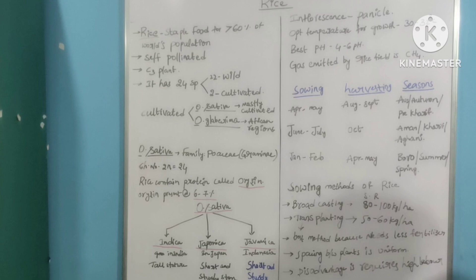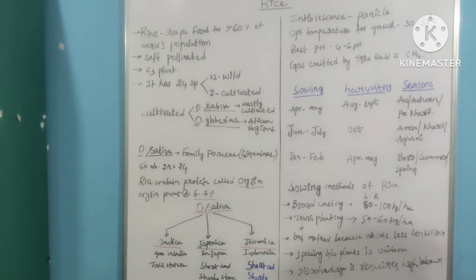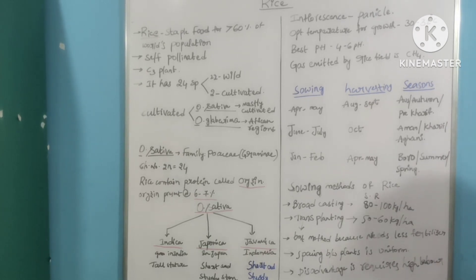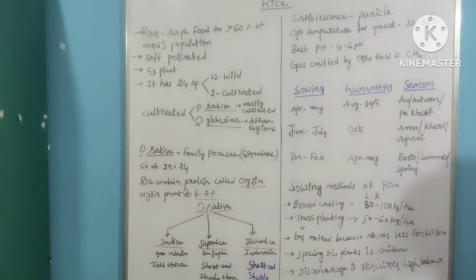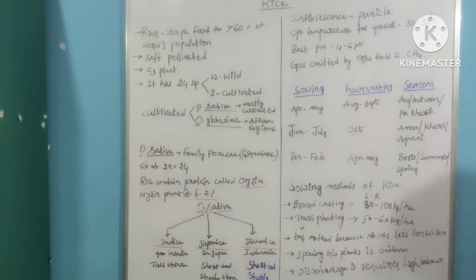Optimum temperature for growing of rice is 30 to 32 degree Celsius. Best pH suitable for cultivation of rice is 4 to 6, that is acidic in nature. The soil should be acidic in nature. Gas emitted by rice field is methane, that is CH4.